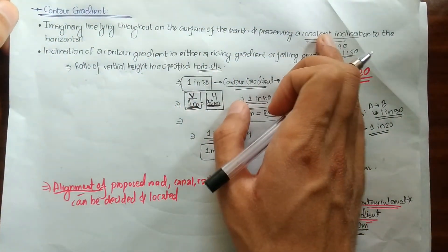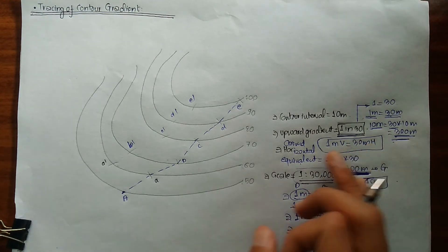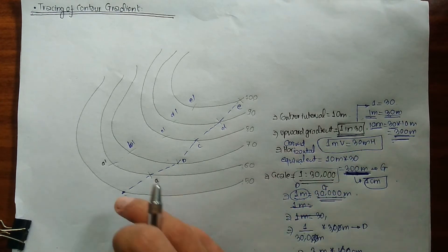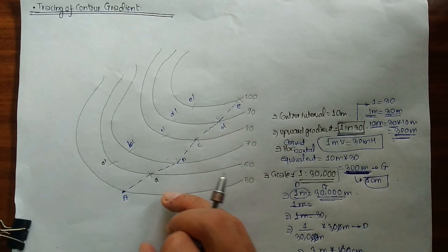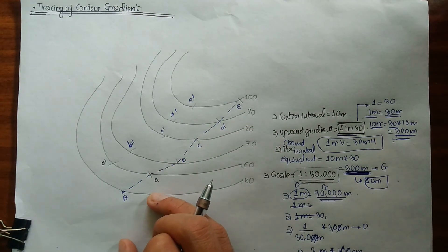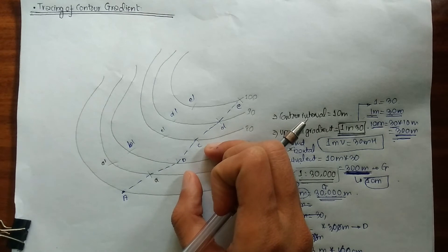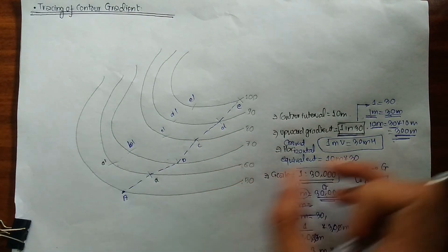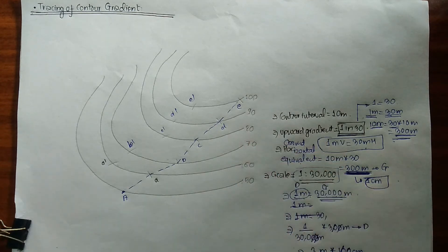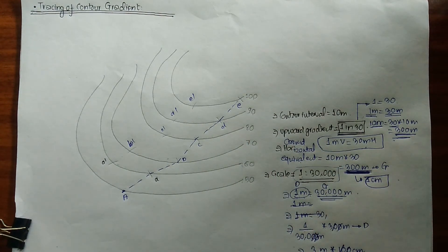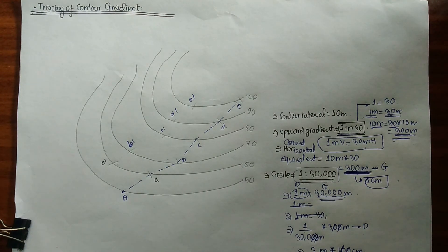Going back to the definition: an imaginary line lying throughout the surface of earth preserving a constant inclination to the horizontal — as you can see, this upward gradient of 1 in 30 rises consistently. For the application: it helps to decide and locate the alignment of a proposed road or railway. If the proposed road has a gradient of 1 in 30, this drawn contour gradient shows how the road would look across the terrain. Hope this video was helpful — please comment below with any queries, subscribe to the channel, and thank you!